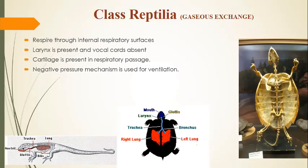The respiratory surface must be moist. Reptiles live in dry conditions on land where very little water is present. They cannot keep their external skin surface moist, so they cannot use the skin as a respiratory surface. That is why reptiles keep their respiratory surfaces inside the body — in the lungs — which are internal respiratory surfaces.